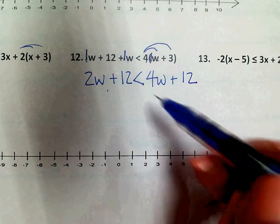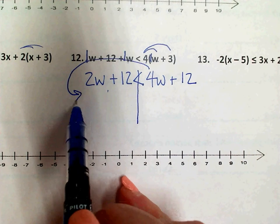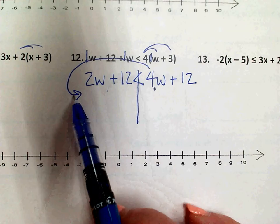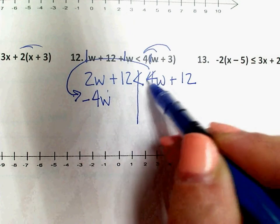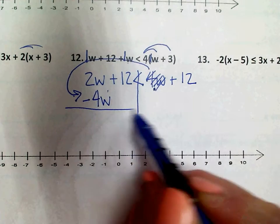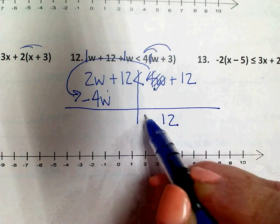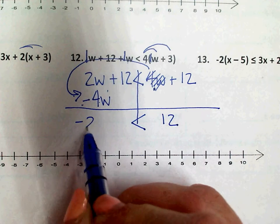So now I want to look and see about getting all of my variables collected together on one side. So if I move this positive 4W to this side, it's going to get a sign change, but it moves it over with the other one.